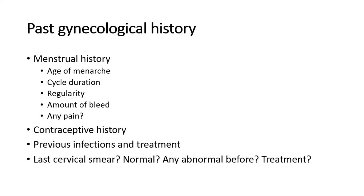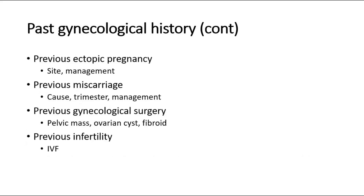If the cervical smear result is normal, did she have any abnormal result before, and if yes, what was the treatment given? We should also ask whether she had any history of ectopic pregnancy — if yes, what was the site of the ectopic pregnancy and what treatment was done? Did she have any previous miscarriage? Did they know or investigate the cause? In which trimester was it, and what was the treatment done?